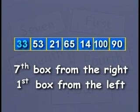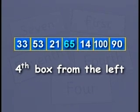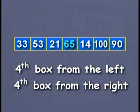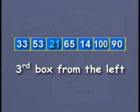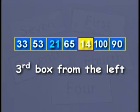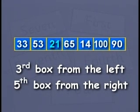That was easy, wasn't it? 65 is in the fourth box from your left. From your right, it is in box number 1, 2, 3, 4, 5 — the fifth box from your right. 21 is in the fifth box from your left.